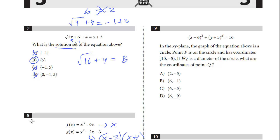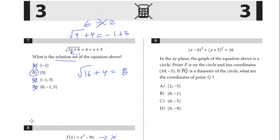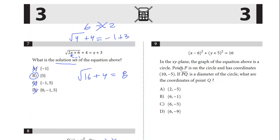In the xy-plane, the graph of the equation above is a circle. Point P lies on the circle, has coordinates (10, -5). If PQ is a diameter of the circle, what are the coordinates of Q? Remember, this is one concept that might come up.